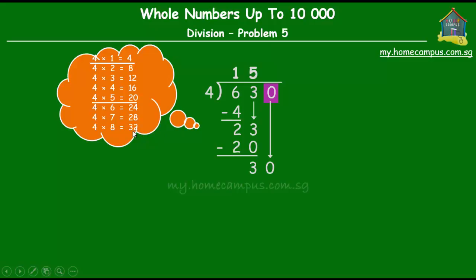32 obviously is too big, so we go one step back and find that 4 times 7 is 28. We put 7 here. 4 times 7 is 28. 30 minus 28 gives us 2 and that's the end of your division.